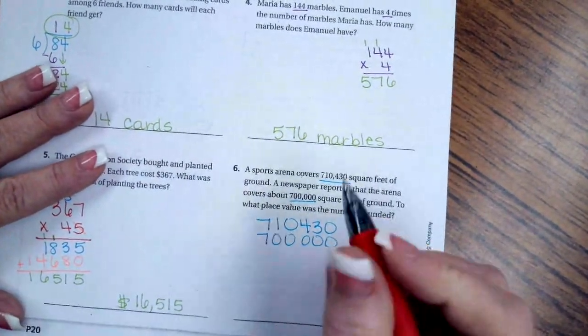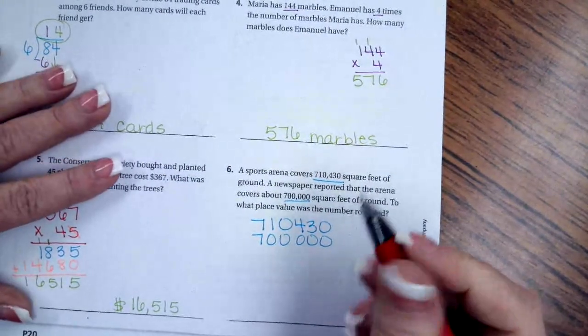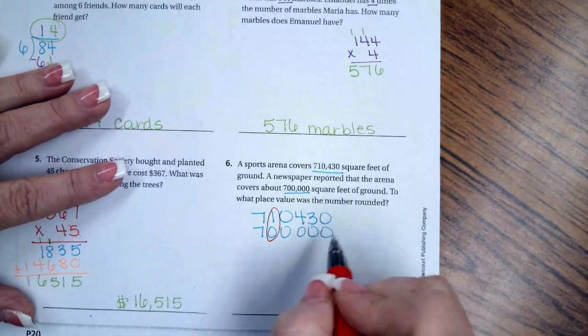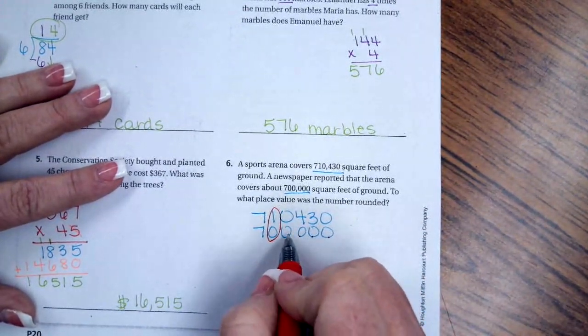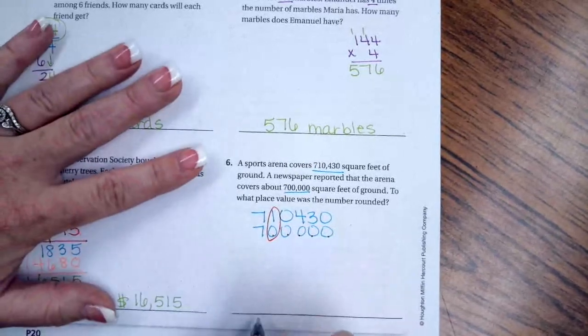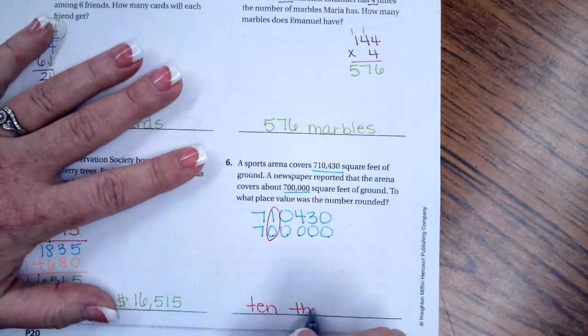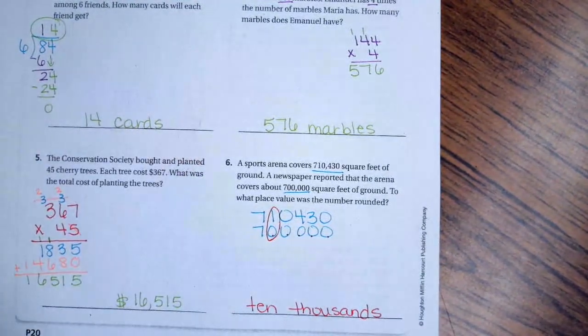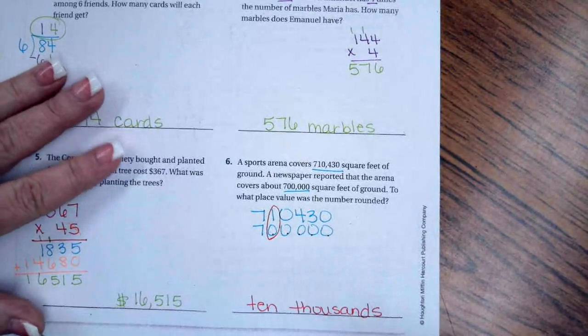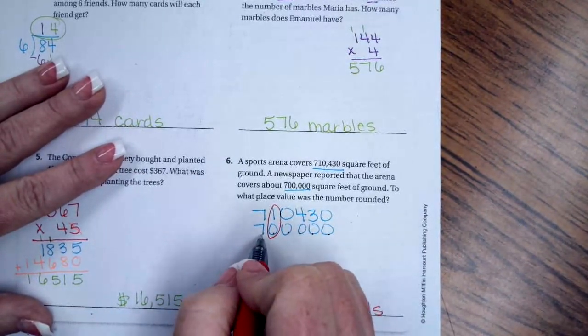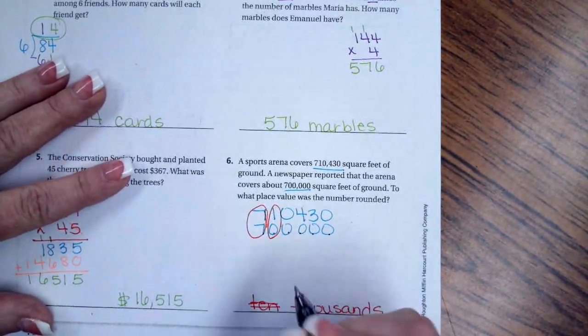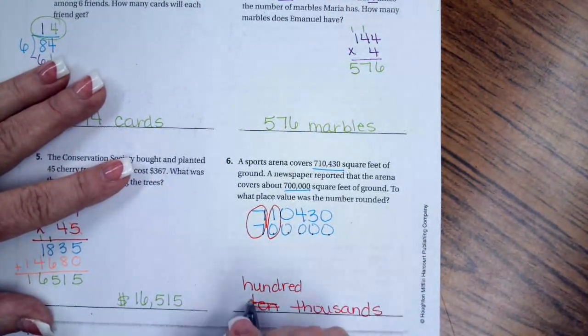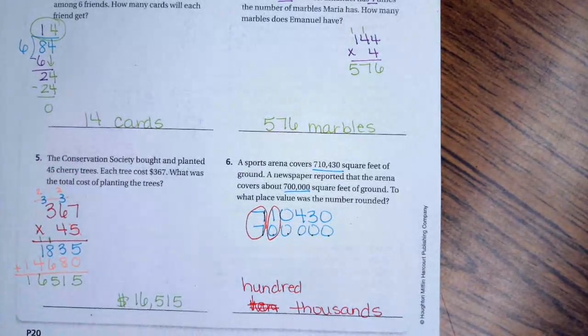So 710,430, 700. So the place where it's rounded to is going to be the first number that's different. Our sevens are the same. This number is what's different. So we're going to go ones, tens, hundreds, thousands, 10 thousands. Oh, you know what though? I made a mistake because the first number that's the same is our sevens, which means it's the hundred thousands. I'm sorry, guys. So ignore my 10.